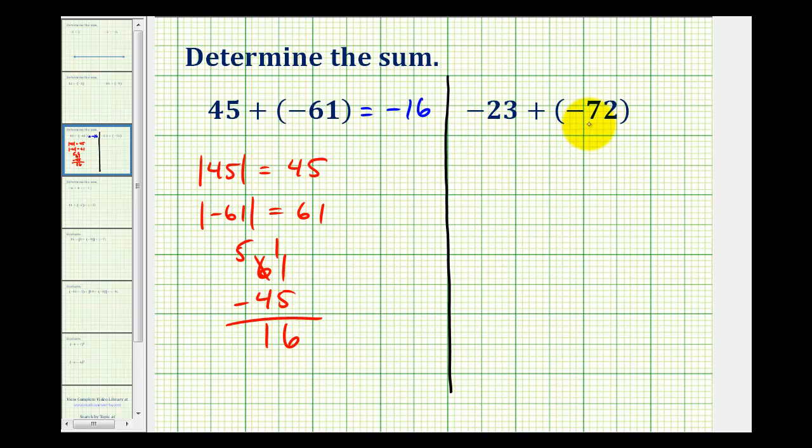So for negative 23 plus negative 72, we'll start by determining the absolute values of both integers.